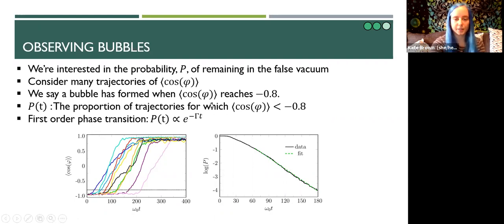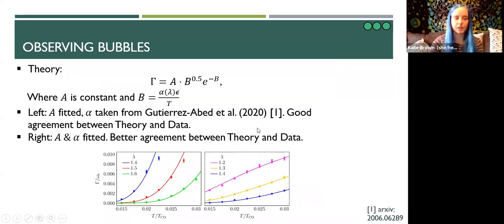The survival probability of remaining in the false vacuum is simply given by the proportion of a thousand trajectories for which this minus 0.8 threshold has not yet been met. According to theory, our survival probability curves should decay exponentially with time. And this is what this example plot here shows. Our data does indeed follow the expected trend. The black curve here shows our data, whereas the green dotted line shows an exponential fit and we see almost perfect agreement here, which is a good sign.